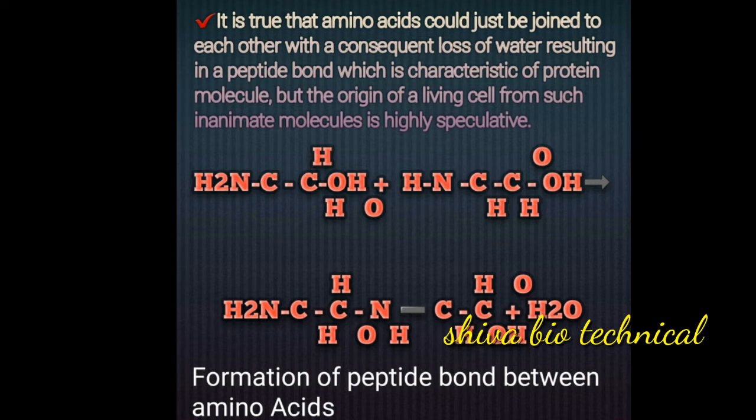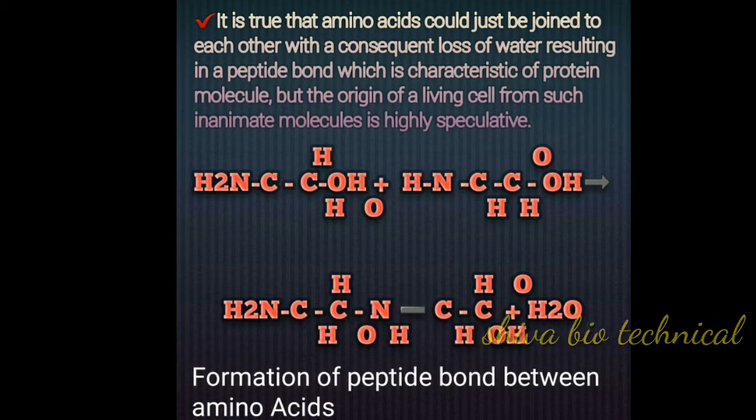How does a peptide bond form? When one amino acid's carboxyl group and another amino acid's amino group release one water molecule, they form the peptide bond.